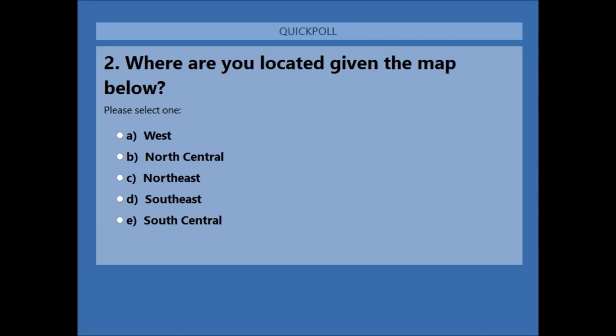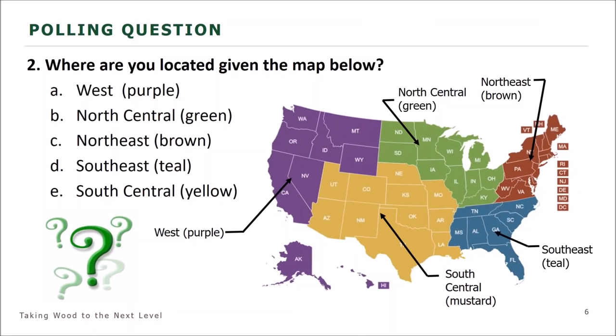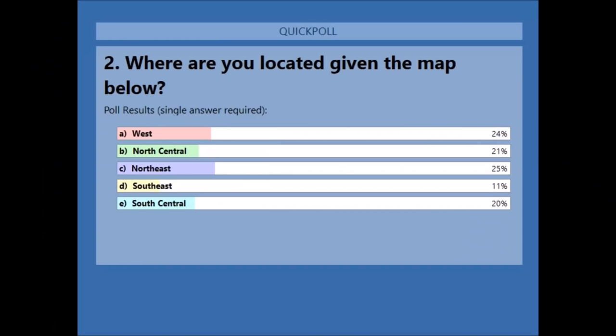I'm going to go ahead and close the poll. We almost have equal representation across regions. Southeast not so much, which is interesting — Virginia is out here. Actually, according to the map it's part of the Northeast.